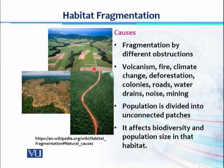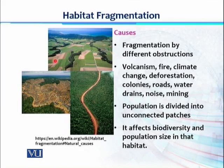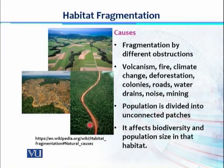In this image, we can see deforestation dividing a patch of habitat into smaller patches. This part of a forest and that part are at distances from each other — isolated, with no forest connection between them. Other than deforestation, human housing colonies could be another obstruction. Roads are another obstruction; we can see a road in the middle of a forest dividing one habitat into two patches. There could also be water drains, noise, and mining, all dividing one habitat into multiple fragments.